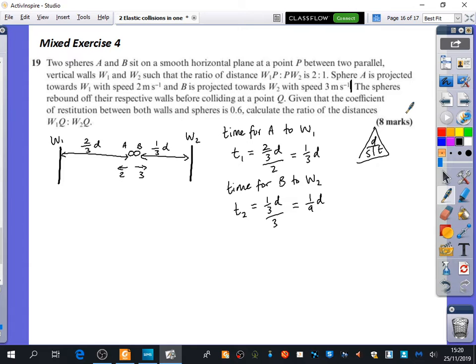The spheres rebound off their respective walls before colliding at the point Q. Given that the coefficient of restitution between both walls and spheres is 0.6, calculate the ratio of the distances for where they collide again. So I'm now going to extend my wall diagram down like this. First of all, we've worked out how long it took for B to get to the wall and how long it took for A to get to the wall. Do they get to the wall at the same time? No. So I'm not going to draw them at the same time because that might be a bit misleading. What I'm going to do is I'm going to now work out, let's say that they crash somewhere over here and call this Q.